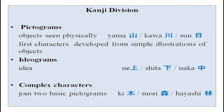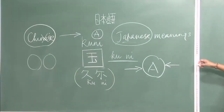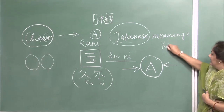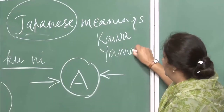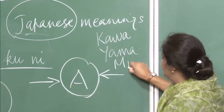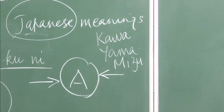Kanjis can be divided into pictograms, ideograms, and complex characters. As we just did, you could see the pictograms for kawa (river), yama (mountain), and mizu (water) — the three I showed you. These are simple: you look at something, that picture comes to your mind, you draw it in lines and it is very clear.